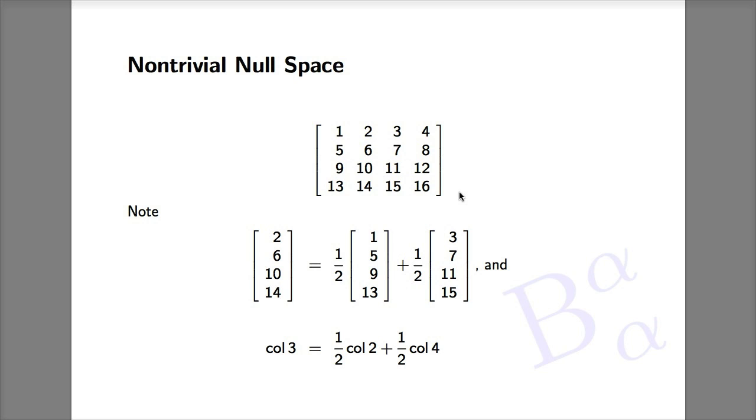There are two ways in which the columns are linearly dependent. Number one, the second column is the average of the first and third, as I have written here. And similarly, the third column is the average of second and fourth.